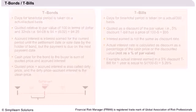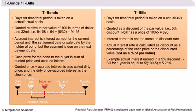Let us begin by learning more about T-bonds and T-bills. We know that bonds pay a fixed amount of interest on your investment. The fixed return is either in the form of a lower purchase price with par value received at maturity — that is, zero coupon bonds — or through regular coupon payments.